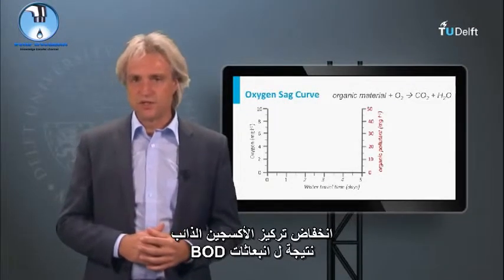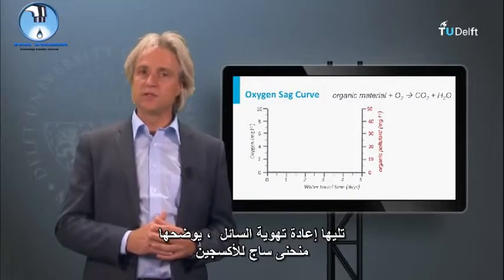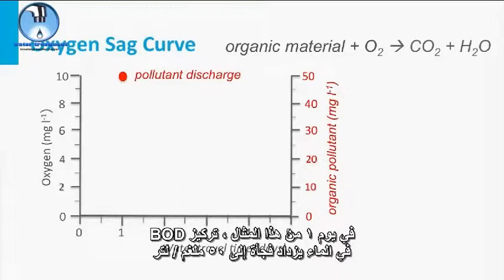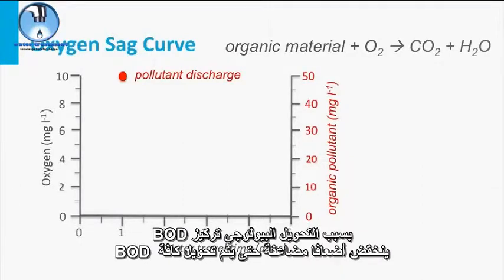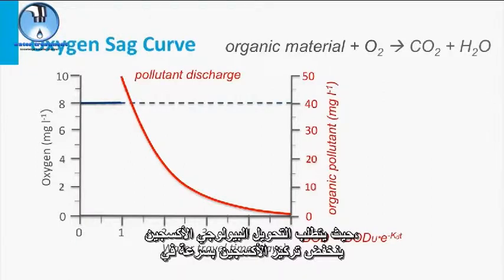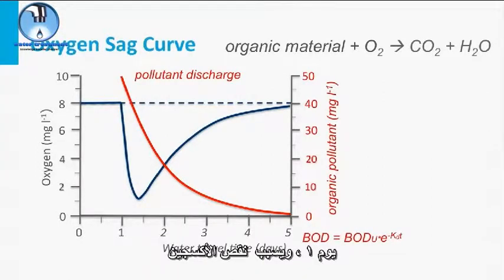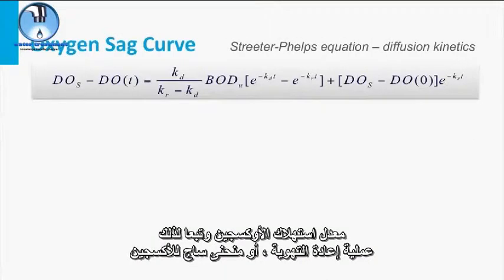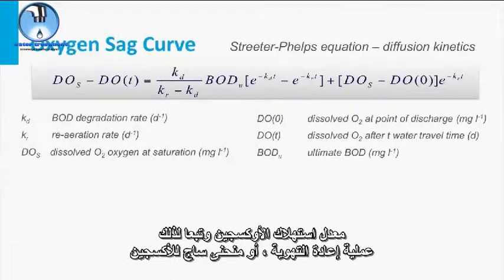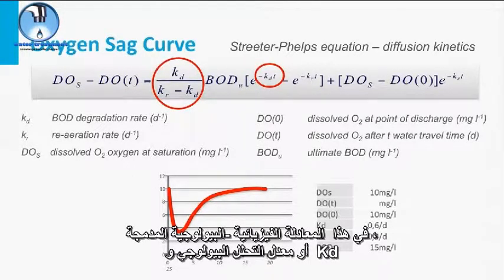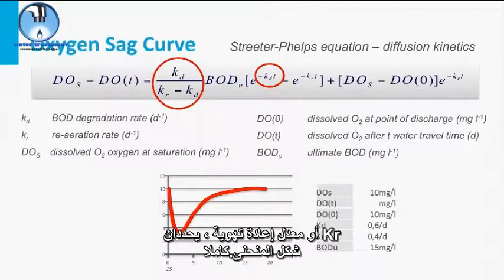The drop in dissolved oxygen concentration as a result of BOD emissions, followed by liquid reaeration, is described by the so-called oxygen sag curve. On day one of this example, the BOD concentration in the water suddenly increases to 50 mg per liter. Owing to bioconversion, the BOD concentration exponentially drops until all BOD is converted. Since this bioconversion requires oxygen, the oxygen concentration rapidly drops at day one, creating an oxygen deficiency, which evokes the physical reaeration process. The oxygen consumption rate and simultaneous reaeration process, or oxygen sag curve, is described by the Streeter-Phelps kinetic equation. In this combined biological-physical equation, the Kd or biodegradation rate and the Kr or reaeration rate fully determine the shape of the curve.